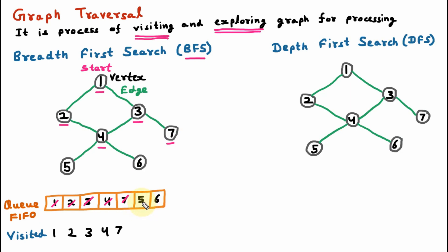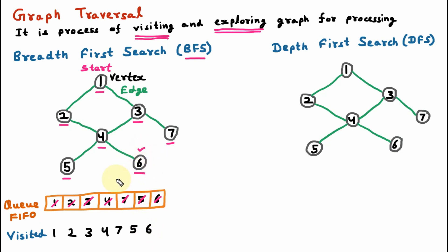We take out the next vertex from the queue, which is 5. We are on vertex 5, mark it as visited, and explore it, but there is no further neighbor available. We take out the next vertex from the queue, which is 6. We are on vertex 6, mark it as visited, and explore it, but there is no further neighbor available. So here all the vertices of the graph are traversed, and the breadth first search traversal order is 1, 2, 3, 4, 7, 5, and 6.